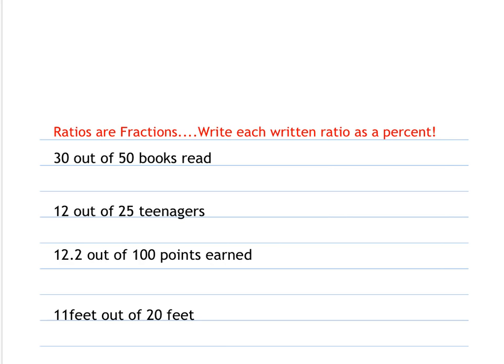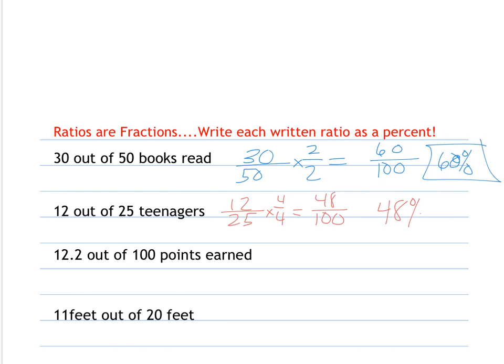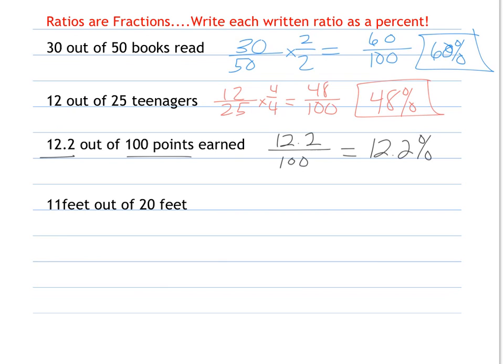If we had a ratio of 3 out of 50 books read, that's the same as writing it as a fraction 3/50. Changing that by a factor of 2, we get 6/100. So that means 60% of the total books were read. 12 out of 25 teenagers - we change that, factor of 4, to get 48/100. So that means 48% of teenagers. 12.2 out of 100 points earned is equivalent to 12.2% points earned. And 11 feet out of 20 feet - 11/20, change by a factor of 5 for 55/100, which is equivalent to 55% of feet.